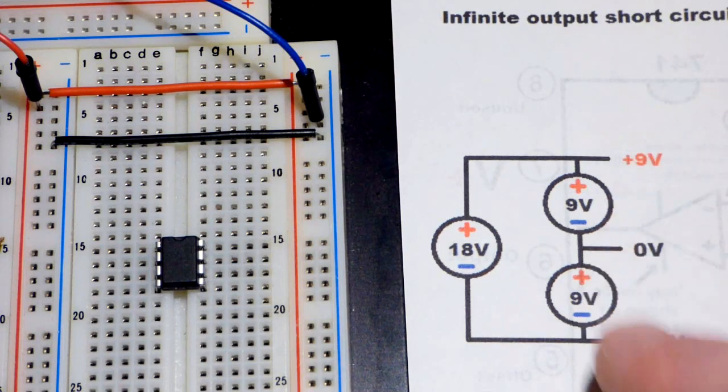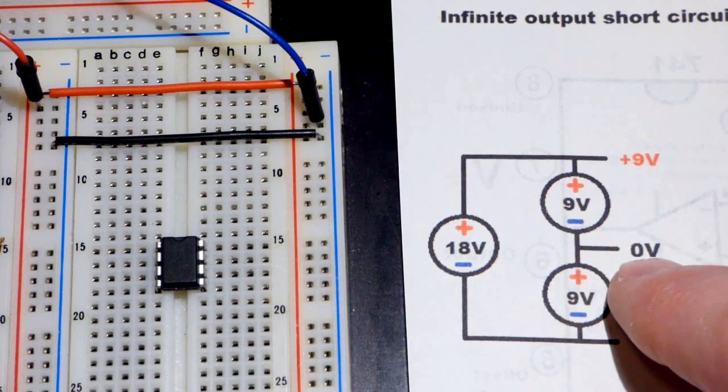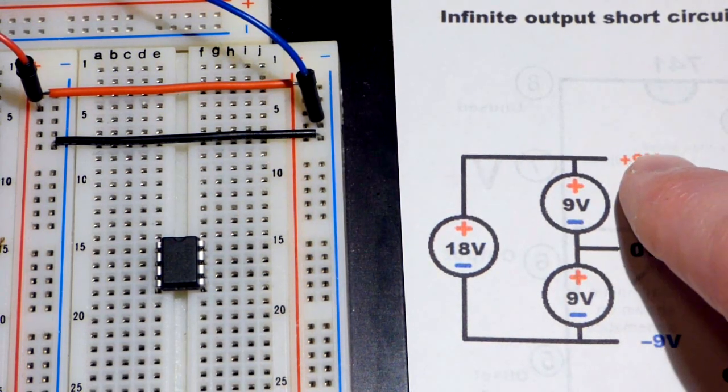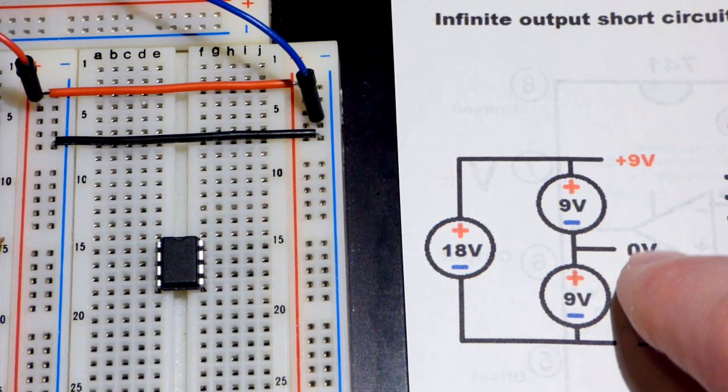We will be able to split the power from the bench power supply, so that we have a zero volt reference point, and then 9 volts positive and 9 volts negative in relationship to that zero volt reference point.